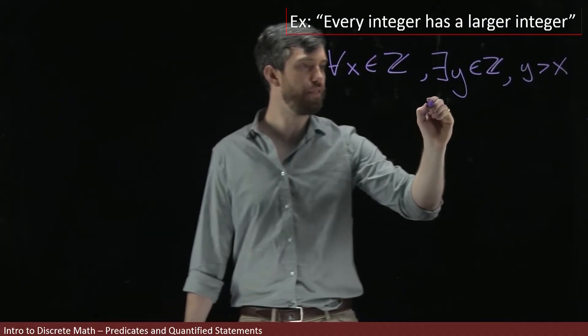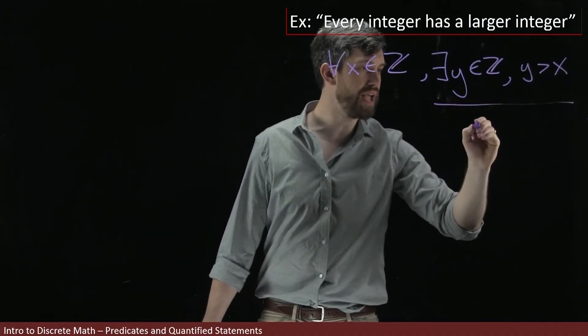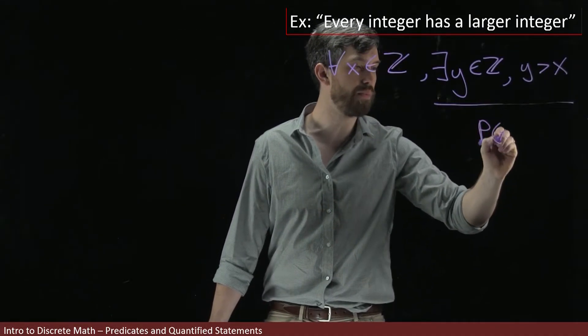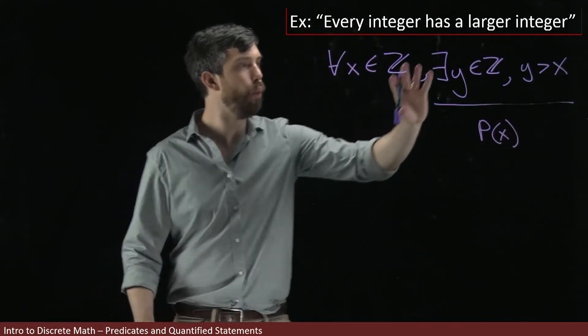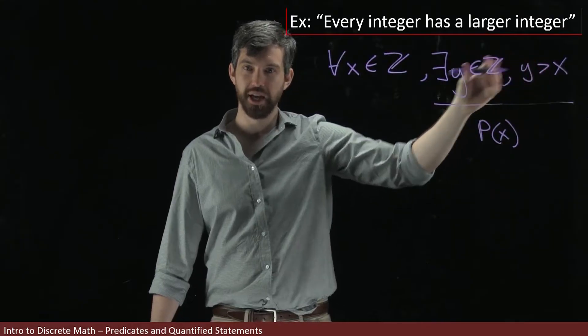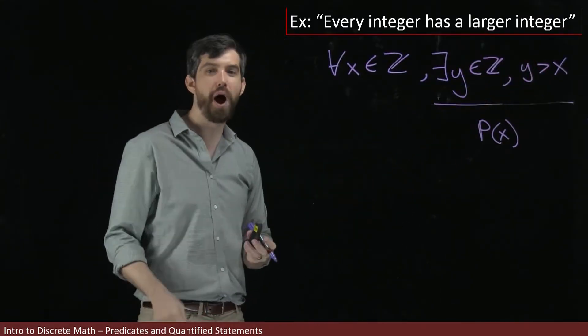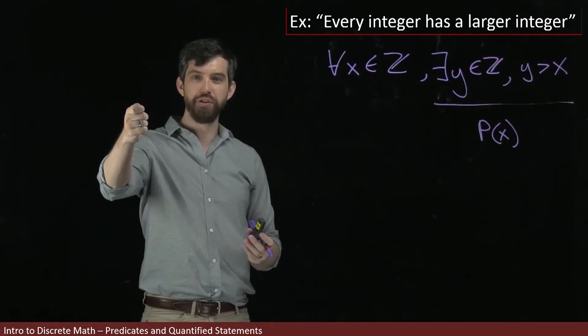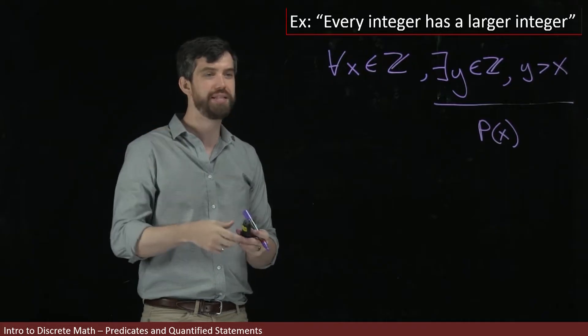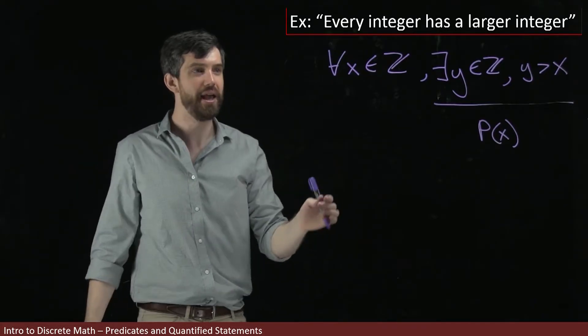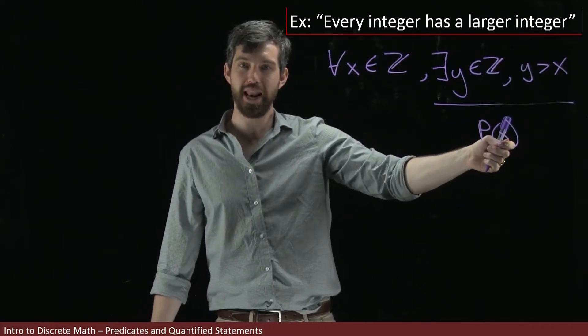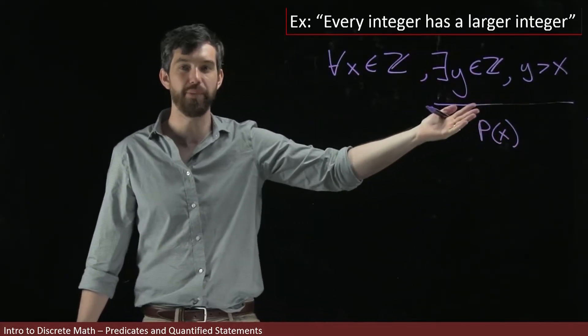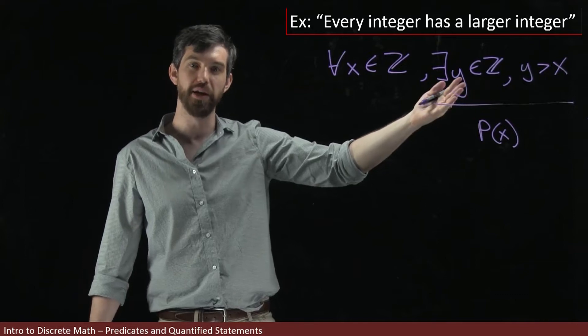Note that this entire thing I've just written down, I could still think of it as a property of x. While there is a y inside of this, because I've quantified my y with there exists a y, you've sort of gotten rid of it and the answer is still the same. Every time I have an x, I feed it into this property and it's either true or false. Either there is something which is bigger than it or there isn't.